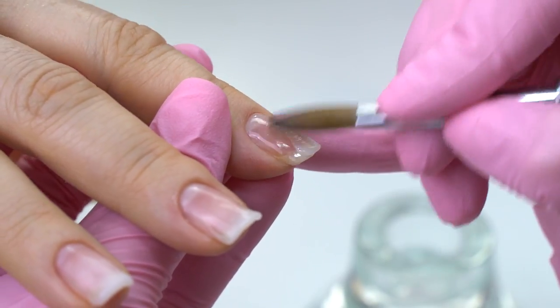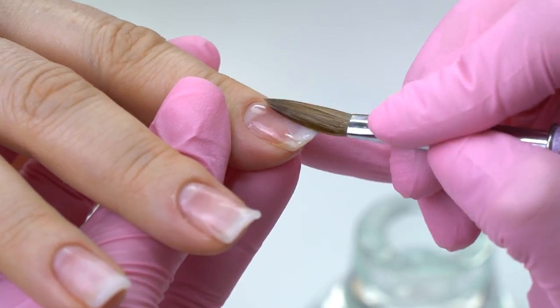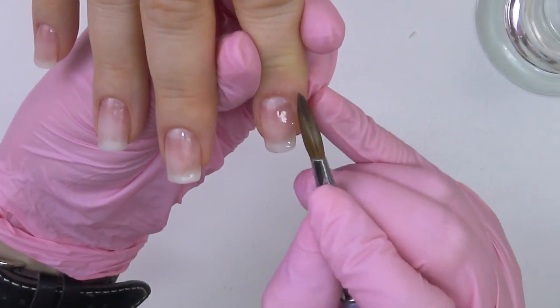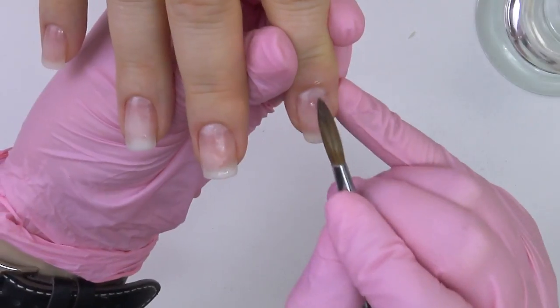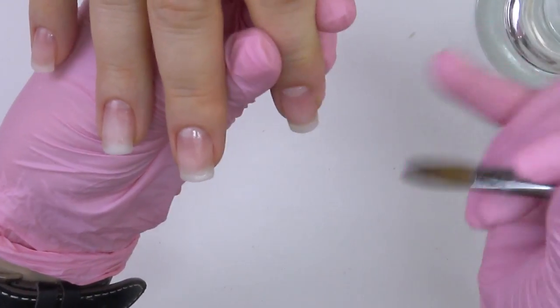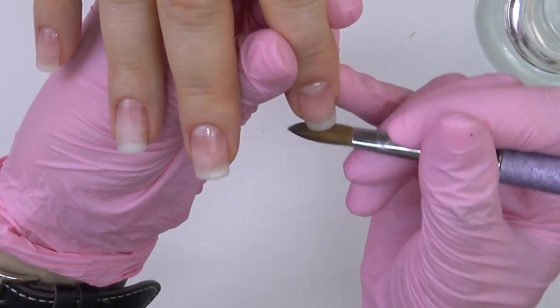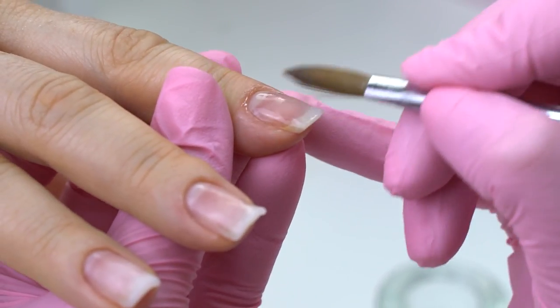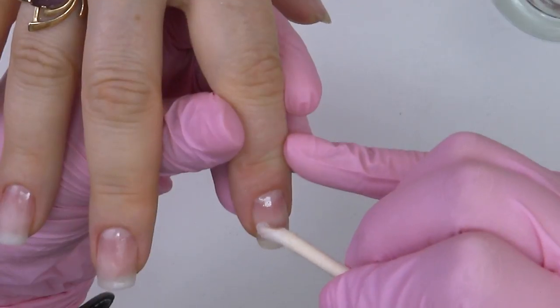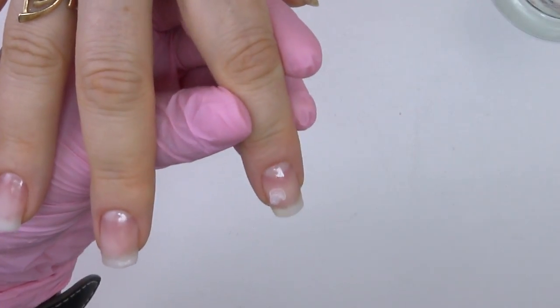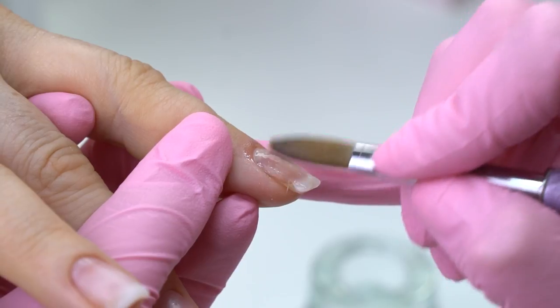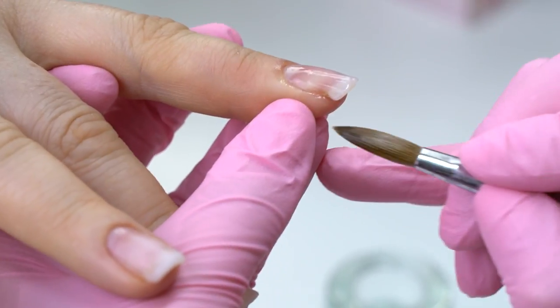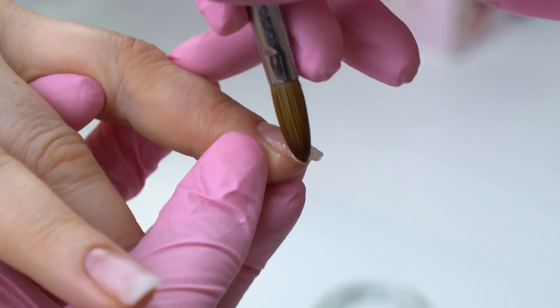We are building up the missing corner on the index finger first. And then we will need to strengthen the left side wall. Since if we leave it like this, as thin as it is right now, it can easily break later. Before curing, there should already be that perfect square shape. And you might have noticed that I haven't filed off the lens. I will do it later.